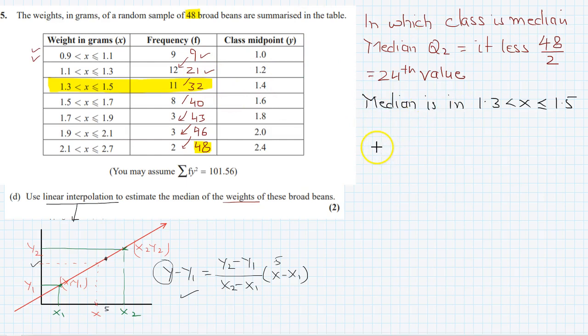This is quite easy. Suppose this is 1.3 and this is 1.5. So our median is lying somewhere in between. Now at this one the frequency is 21, and at 1.5 the frequency is 32. And our median is the 24th value. So we know that 24th is not near 32, so 24th is roughly here.